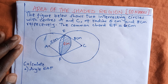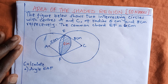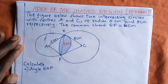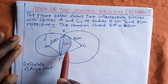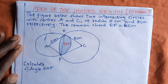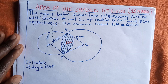Hello guys, welcome to today's lesson. Today I'm going to look at the area of the shaded region. This time we have two circles that are intersecting and they have a common chord called EF. We want to work out the area of the shaded region in the middle of this figure.